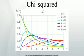Non-central moments. The moments about zero of the chi-squared distribution with k degrees of freedom are given by standard formulas. Cumulants. The cumulants are readily obtained by a formal power-series expansion of the logarithm of the characteristic function. Asymptotic properties. By the central limit theorem, because the chi-squared distribution is the sum of k independent random variables with finite mean and variance, it converges to a normal distribution for large k.